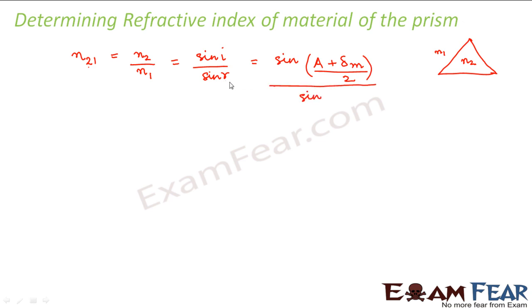So we also saw that the angle of refraction r was equal to a by 2. So we can say that the refractive index of the material of the prism is given by mu is equal to sin of (a plus delta m) by 2 divided by sin a by 2.